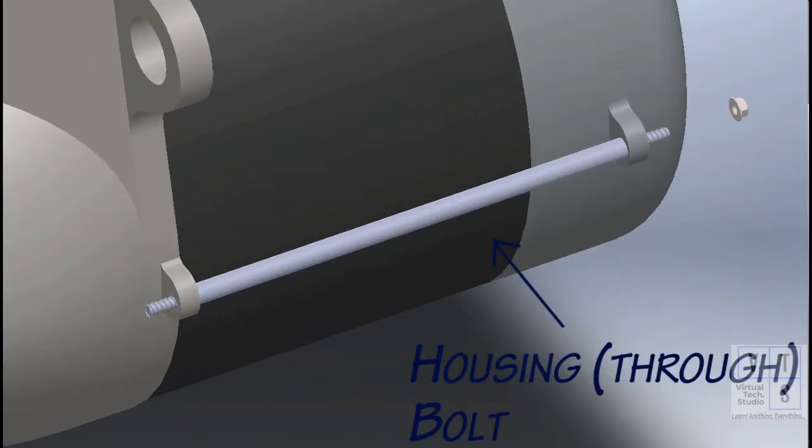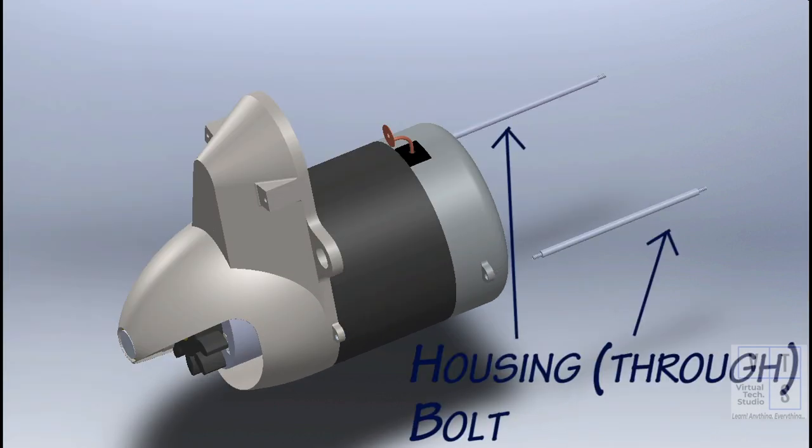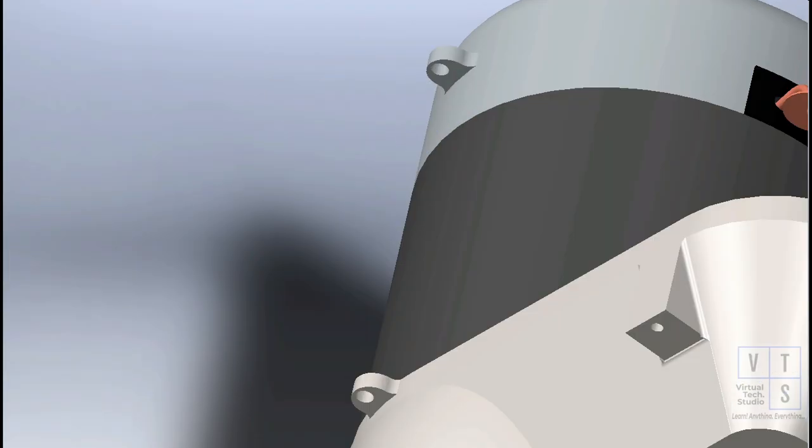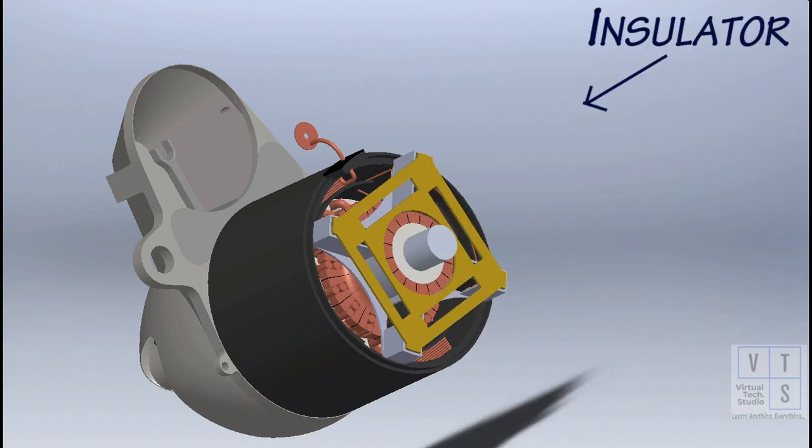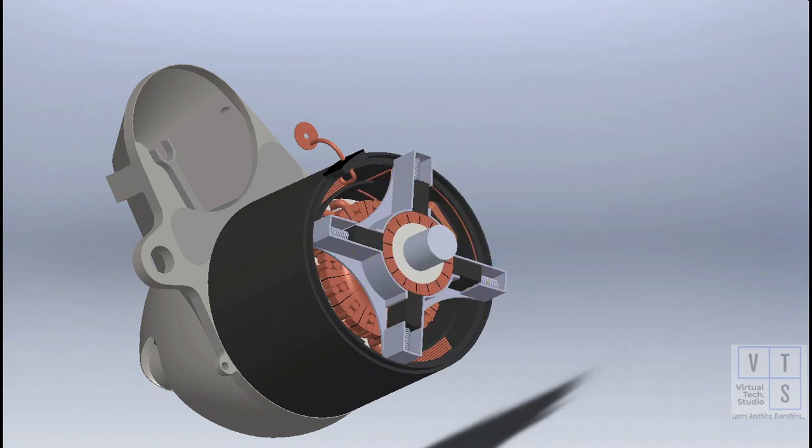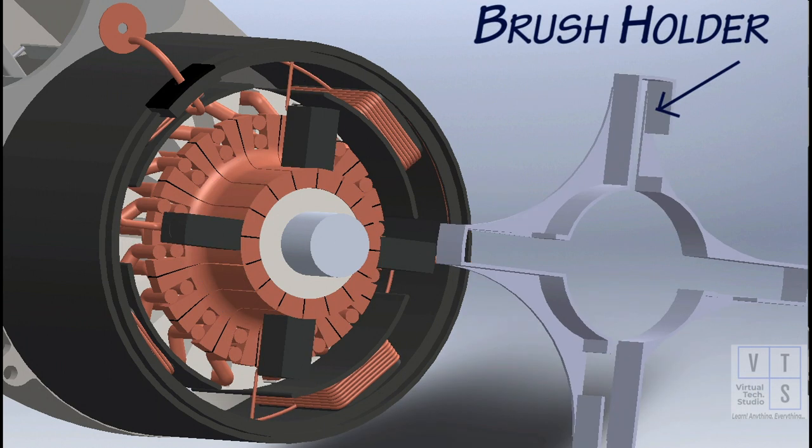Remove the housing bolts, also known as through bolts. Pull out the rear housing. Remove insulator that hold the brushes and springs in place. Then take out the brush springs and the brush holder after that.